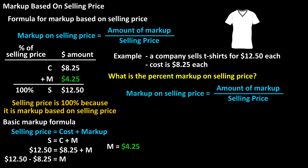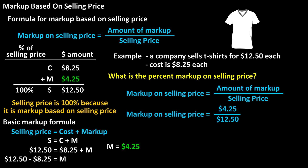Now we can use the formula. Markup on selling price equals the amount of markup divided by the selling price. So we have $4.25 divided by $12.50, which calculates to 0.34, or 34%. That is the percent markup on selling price.